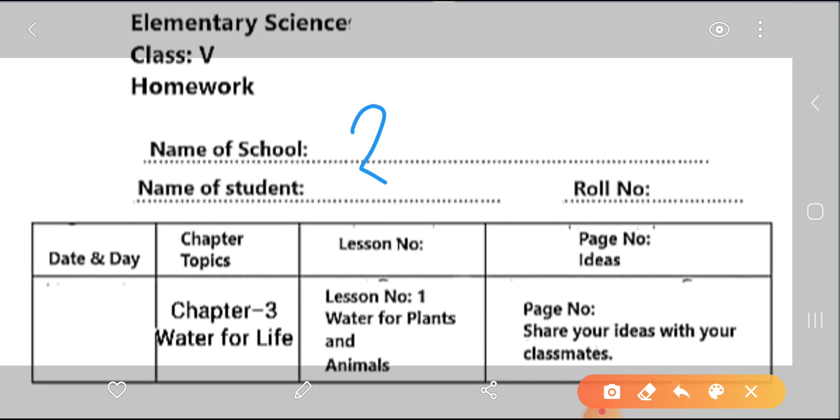Your school name, you name, and here is a serial number or roll number. That is date, what's the date you are writing, chapter and topics. This is chapter 3 and topics is the chapter name.